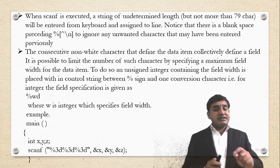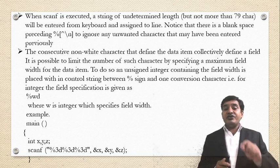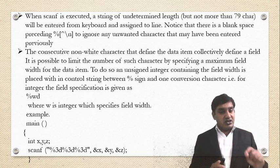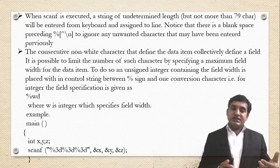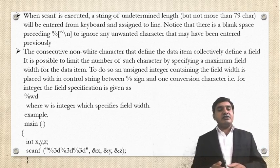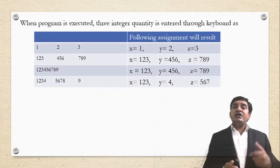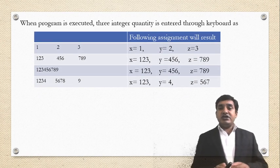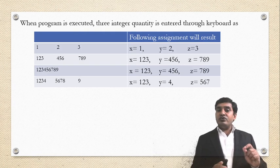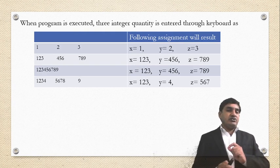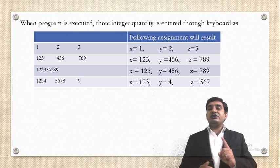Let's see what the output is if we consider different values of x, y, and z when the program is executed. If x=1, y=2, z=3, then the result displayed is x=1, y=2, z=3. If input is given as '123 456 789' with blank spaces between them, the formatted output is x=123, y=456, z=789, because the specified width is 3.